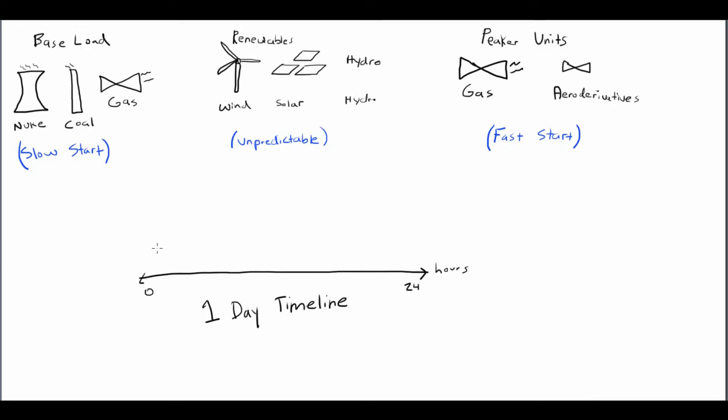The easiest way to imagine the demand cycle of electricity is everybody wakes up in the morning. It's pretty quiet in the morning when everybody's sleeping, and then when everybody wakes up they get up, take a shower, use hot water, turn on their coffee makers, cook breakfast. Usually what you see is a little spike in the morning.